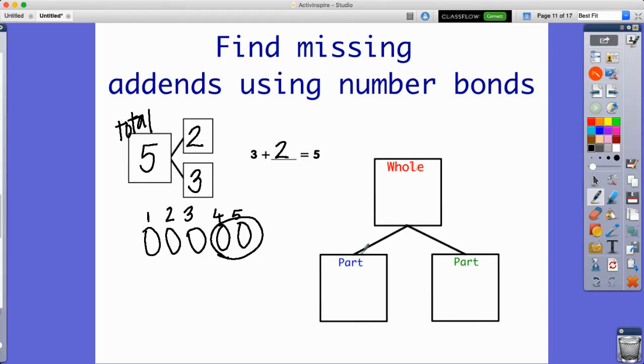Now you also may see a number bond that looks like this, like a part-part-whole. Once again, our sum is going to go here. Just know that this is the same as this. It just looks a different way. It's standing up instead of going across. So I'm going to put my parts, which are my addends. I'm going to put them both in here. This is the same as this model.